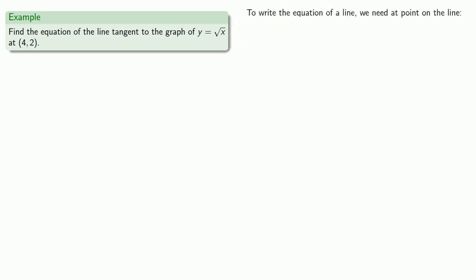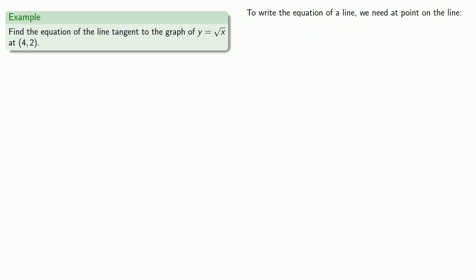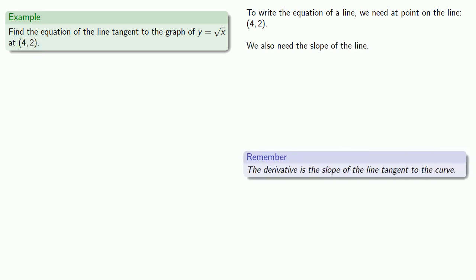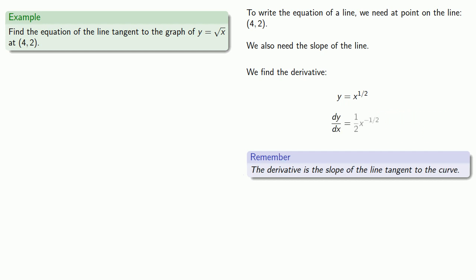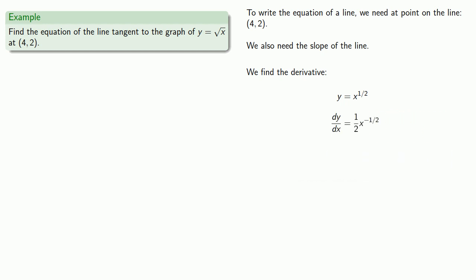To write the equation of a line, we need a point on the line. Well, the point (4, 2) seems to be good. We also need the slope of the line. The derivative is the slope of the tangent line, so we'll find the derivative of y equals square root of x. Since our point is at x equals 4, we'll want to evaluate the derivative at x equals 4.